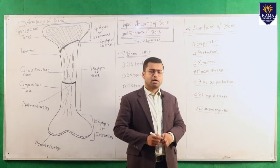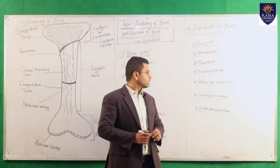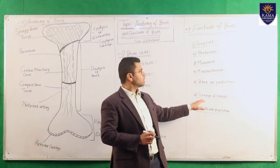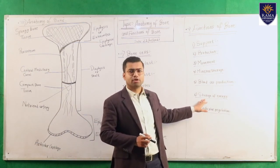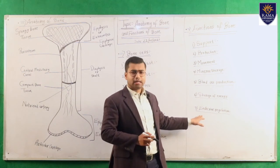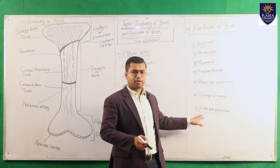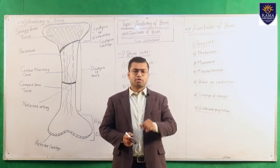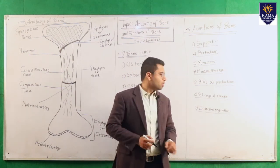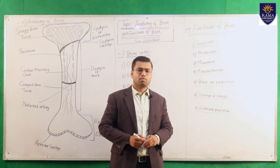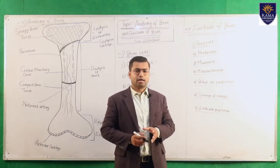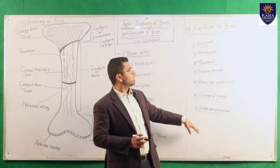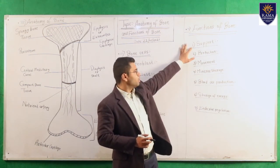The sixth function is storage of energy. The yellow bone marrow consists of lipids, and lipids are used as a source of energy, so energy is stored in the bone. The seventh and last function is endocrine regulation — bone produces the hormone osteocalcin, which regulates blood sugar levels and also helps in the fat-burning process.